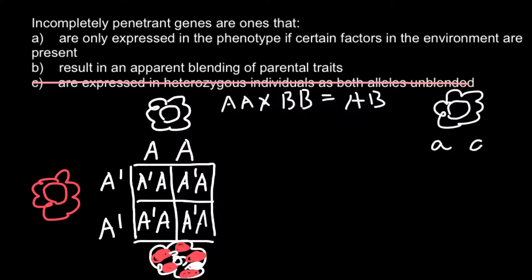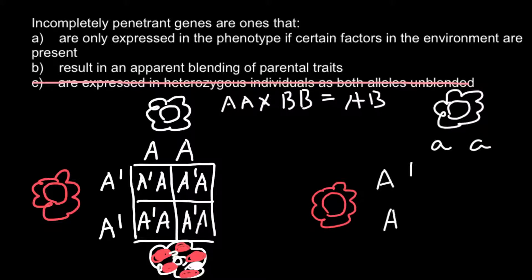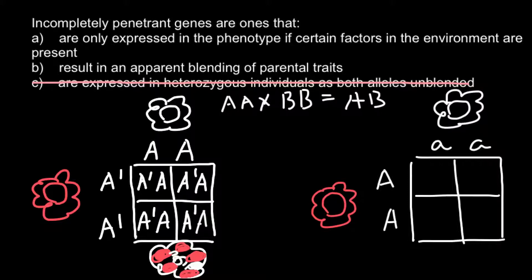Once again imagine the same situation: we have one plant with white flowers and genotype small-a small-a. White color in most cases is the absence of color — that means the dominant allele capital A has mutated and color is not produced. So small-a is the same dominant allele but with a mutation resulting in inability to produce a pigment. Another parent has red flowers, and when we build the Punnett square, all the progeny are heterozygous.